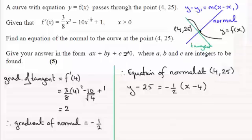And to get it in this form, there's no fraction, so I'm going to multiply both sides by 2. And if I do that, I'm going to get 2y - 2 lots of 25, so that's 50. And then here, this is just going to leave me with -1 times (x - 4). So -1 times x is -x, and -1 times -4 is plus 4.